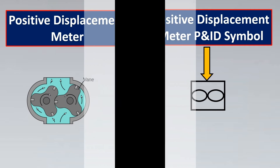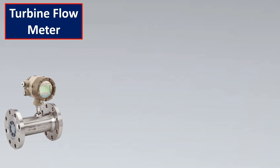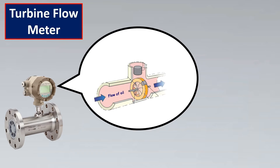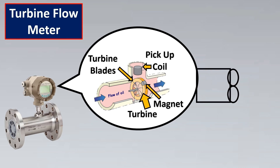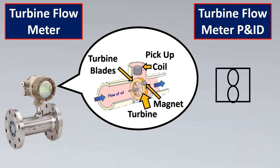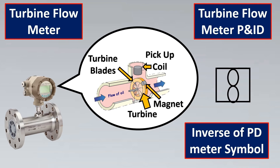The turbine flow meter symbol is very similar to the positive displacement symbol. In a turbine flow meter, flow causes the turbine blades to move; the faster the blades rotate, the higher the flow, detected by a magnetic pickup coil. The most important elements are the blades, which are shown in the symbol along with the body. Notably, this is the inverse of the positive displacement symbol — where the vanes are shown in the horizontal plane, the turbine blades are shown in the vertical plane.